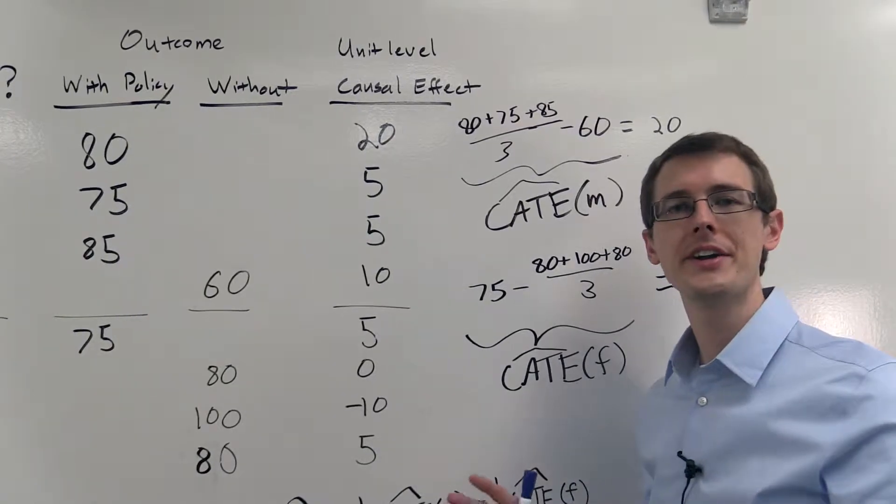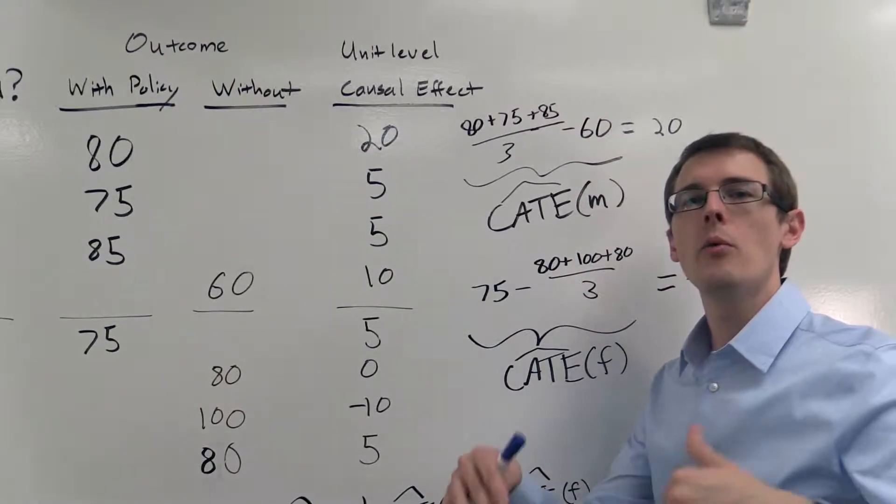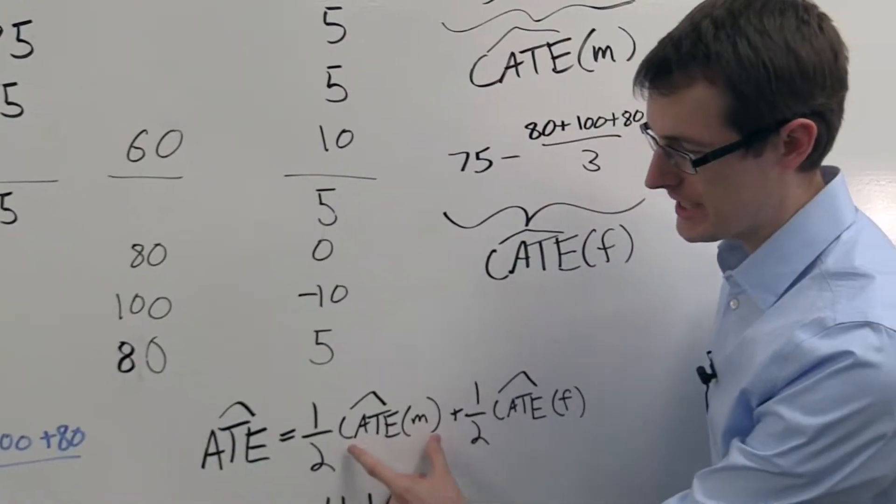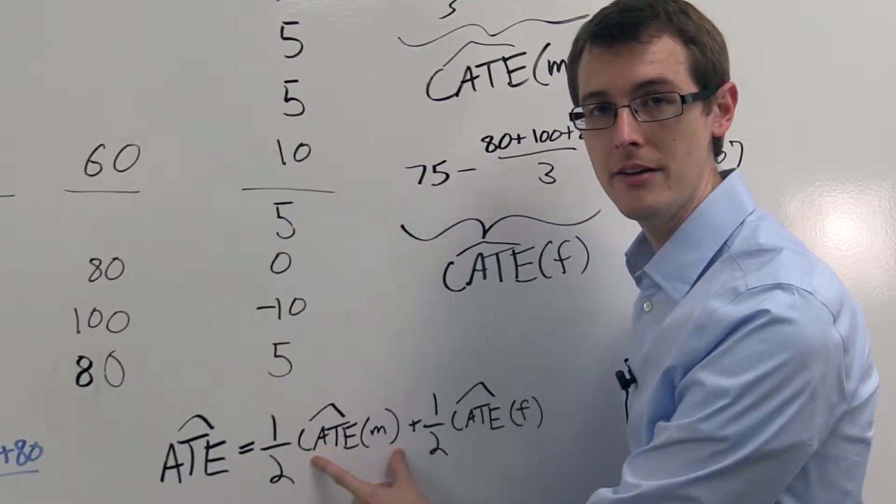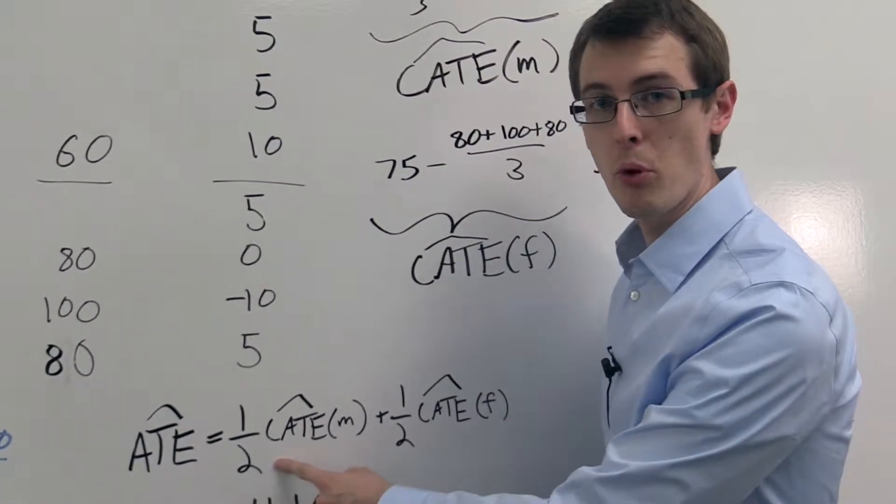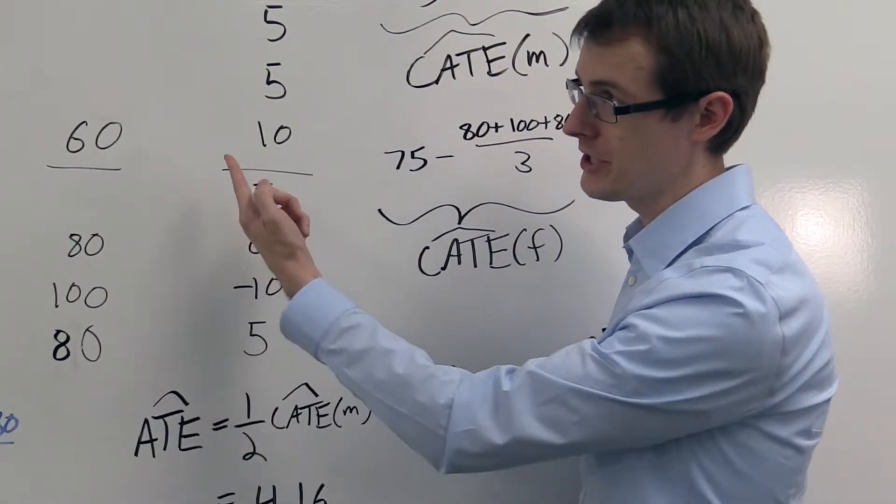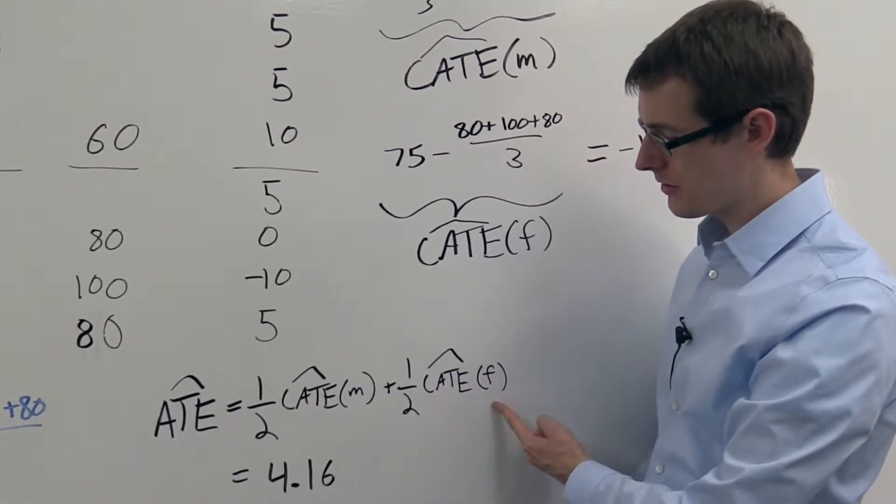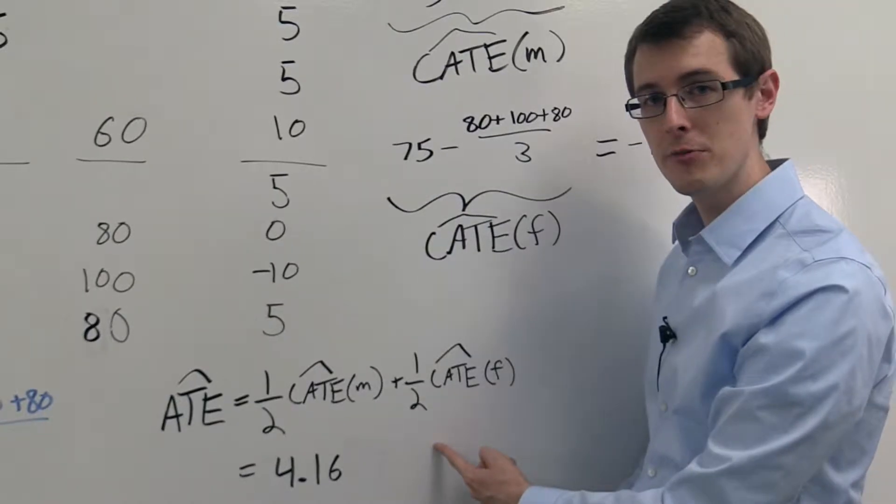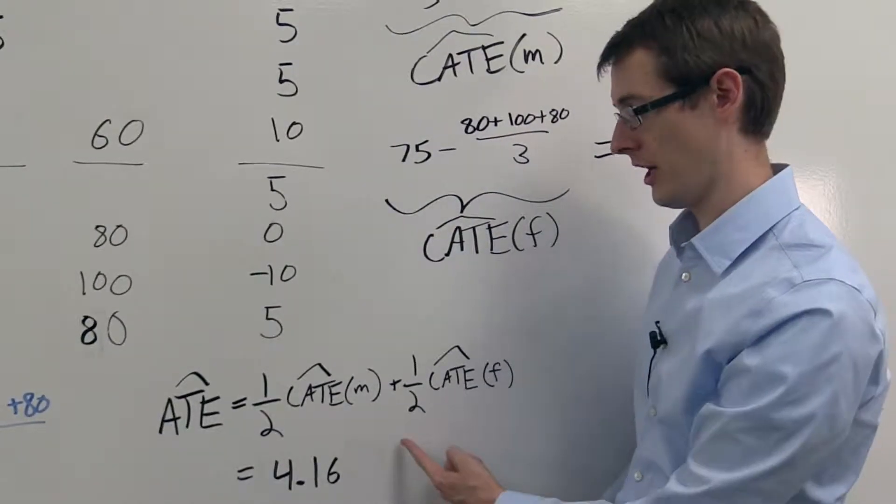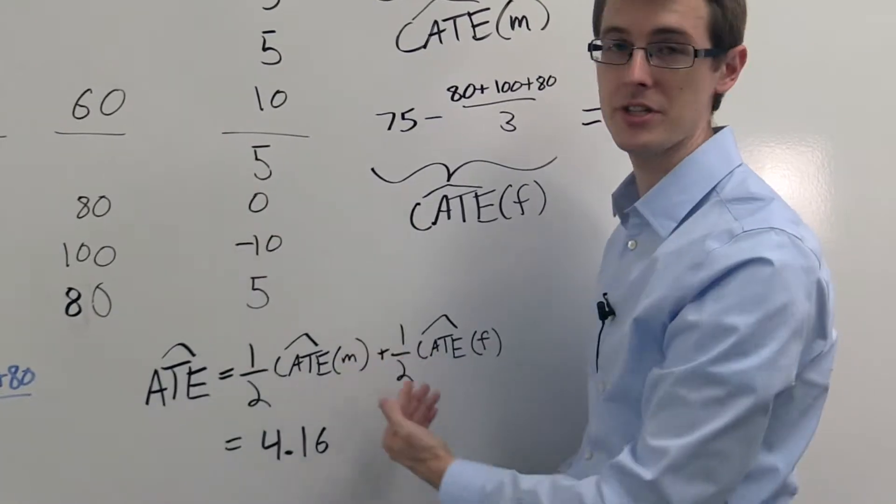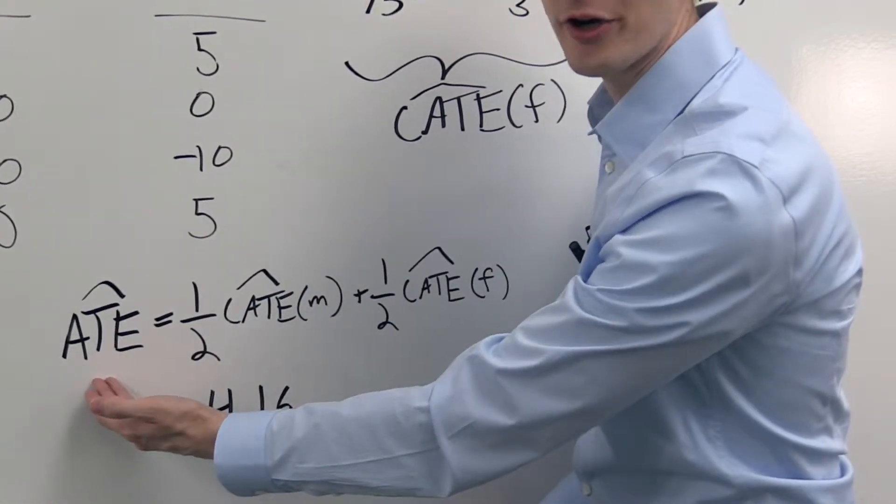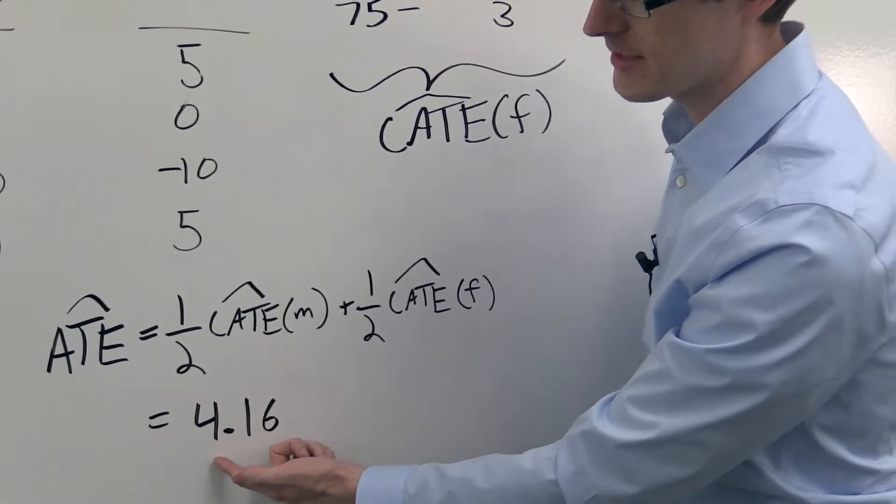So now once we've gotten our conditional average treatment effects, we can combine them to get the overall average treatment effect as follows. You just take the conditional average effect for men, multiply it by the proportion of men in the sample, which here is just 50%, so one-half, add the conditional average treatment effect for females, multiplied by the proportion of females in your sample. Again, here it's just one-half, because there's 50% females. And that's going to give you an estimate of the average treatment effect, in this case, 4.16.